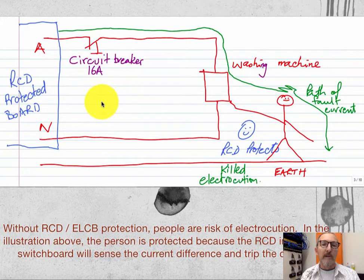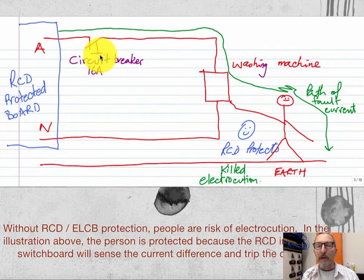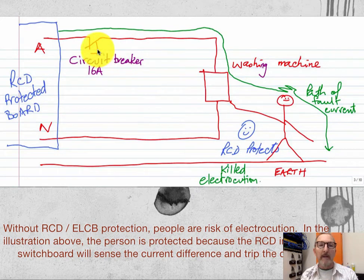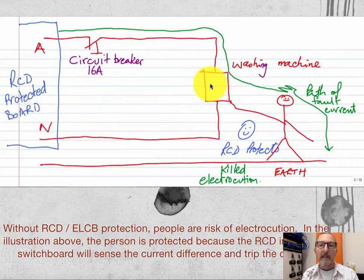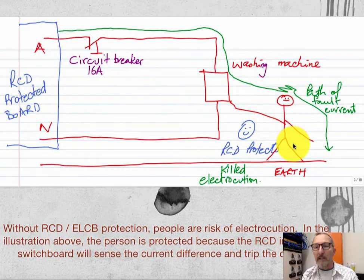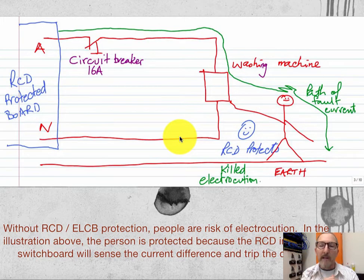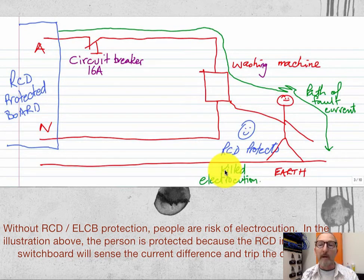Here's a real situation with an RCD-protected board with active and neutral, and following the RCD we have our circuit breaker. Remember: the circuit breaker protects property against overheated cables causing fire; the RCD protects lives. So with the RCD followed by the circuit breaker, here we've got a washing machine. Normally I've got equal current going in and coming back out. But if the washing machine develops a fault, the fault current would go down through my body to ground. As soon as we get an imbalance of 30 milliamps or more, within 30 milliseconds the RCD trips — and therefore I'm protected, otherwise I could have been killed by electrocution.